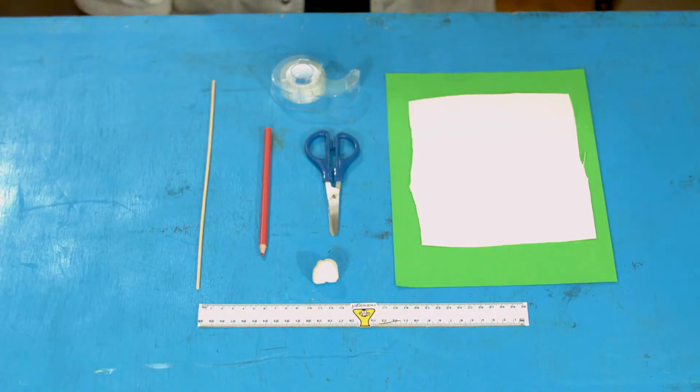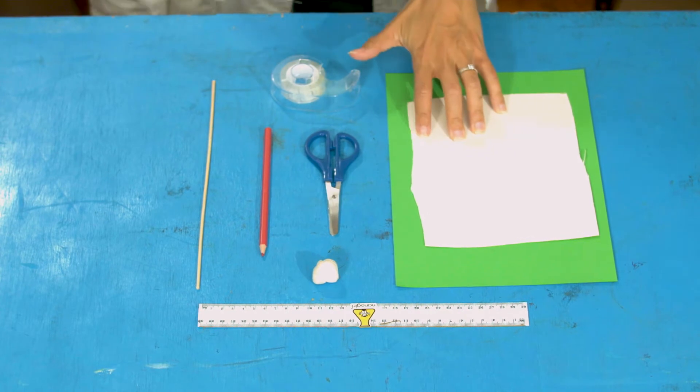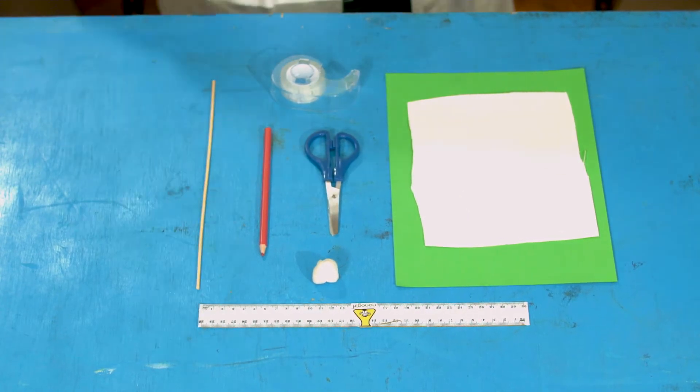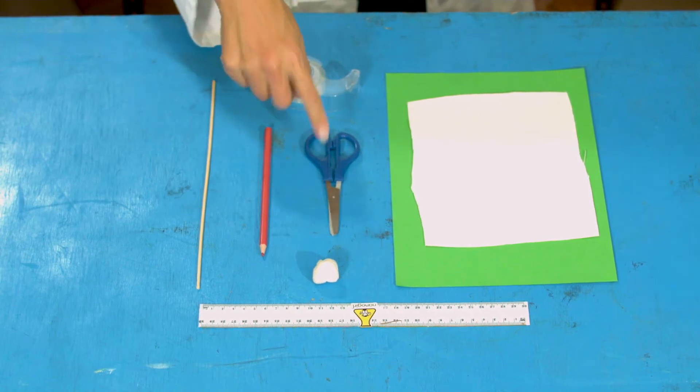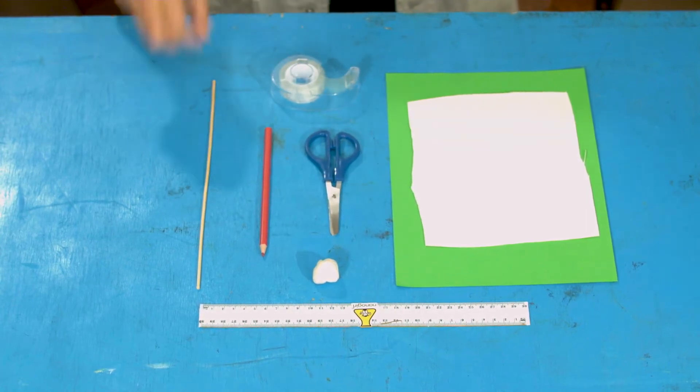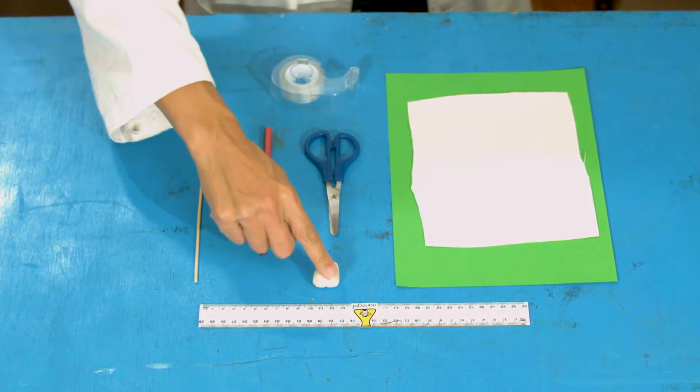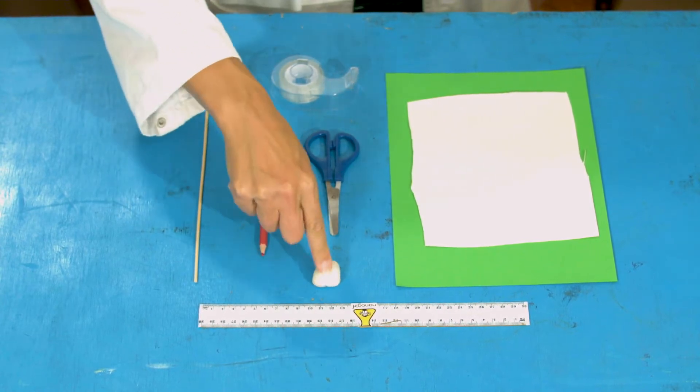So why don't we make an aerofoil today. You will need a thin sheet of card like a cereal box card, a sheet of paper, a ruler, a pencil, scissors, tape, a wooden skewer or a thin stick, and some blue tack or plasticine or whatever it is you like to make that squishy and fun.